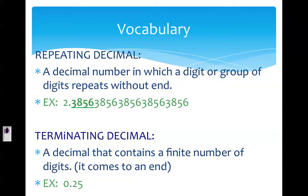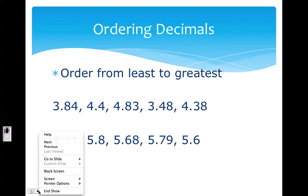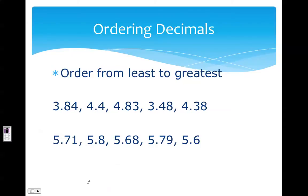Now we're going to talk about ordering decimals. When ordering decimals, it's very important that you look at the directions — it will tell you which way to go. Ours says order from least to greatest, so we are going to start with the smallest number. I look first at the whole number place. In this case we have three, four, four, three, and four, and I decide which one is smallest.